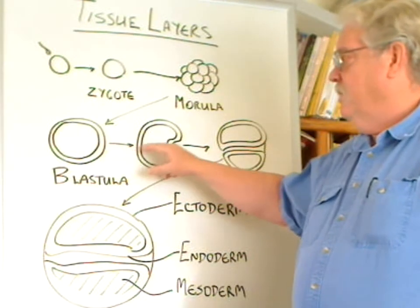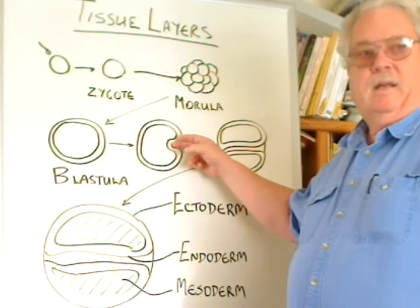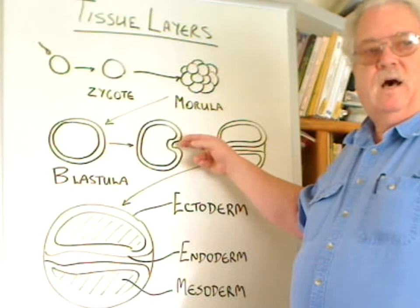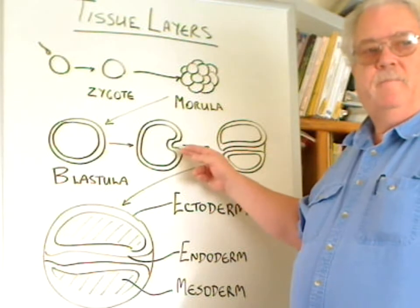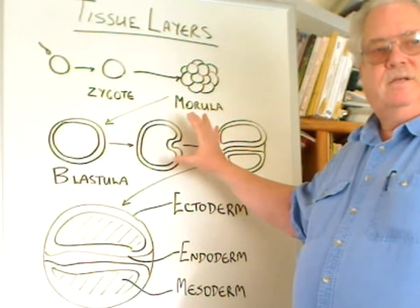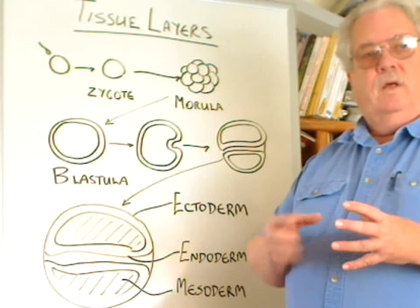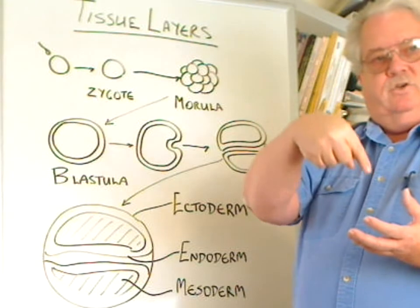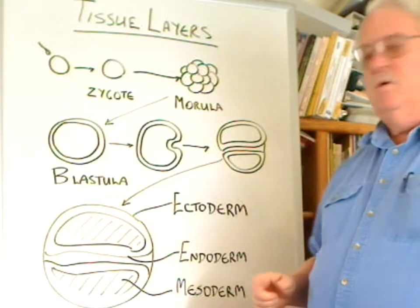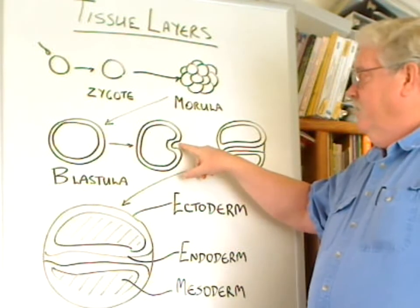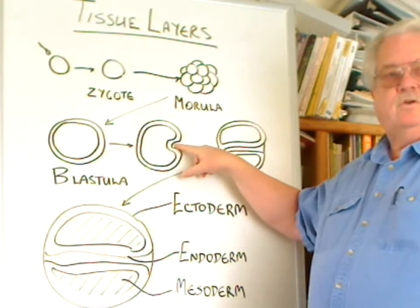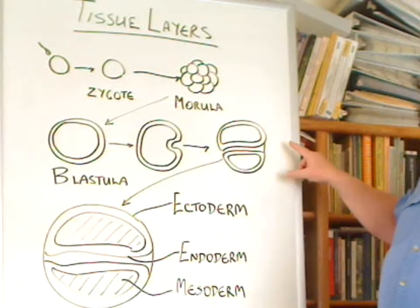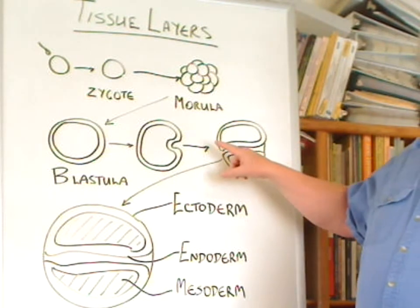The next stage involves an in-pocketing, or what we call an invagination, of one side of this blastula. You can visualize this if you were to take a toy balloon and poke your finger in one side — it would take the outside layer and start to shove it towards the interior. This structure that starts to poke in then grows across the blastula until it reaches the other side, forming a tube.